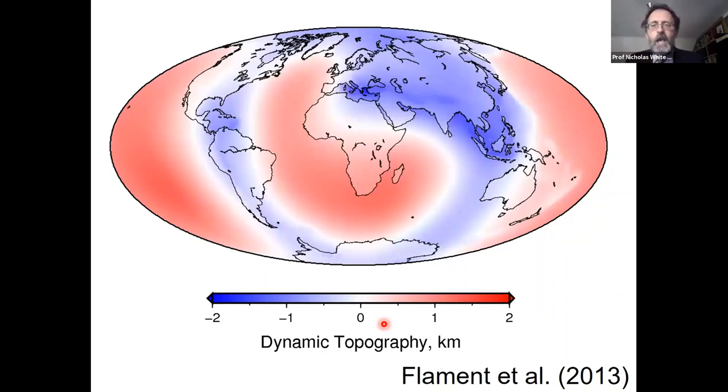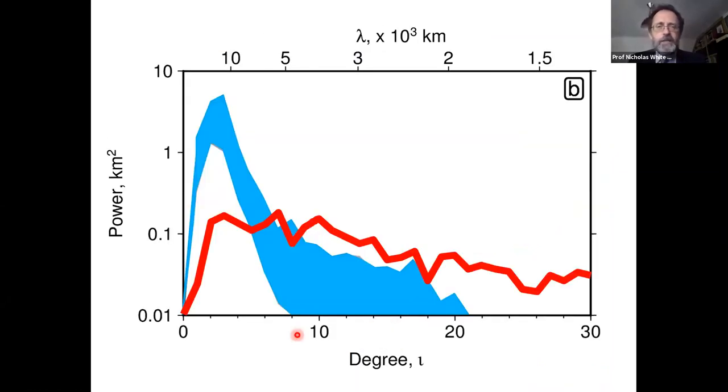The predictions of dynamic topography built out of Stokes flow generally look like the map I'm showing you. Compare prediction with observation. The pattern over the globe is more or less the same, but the amplitude is completely different. The predictions suggest dynamic topography at these long wavelengths has an amplitude of ±2 kilometers, and we're only seeing ±100 meters.